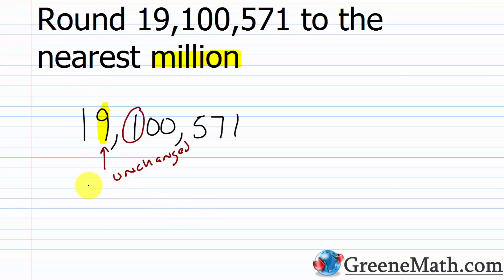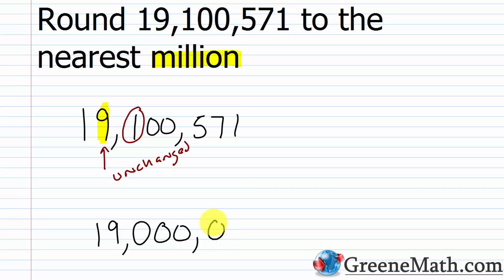So the 1 and the 9 will stay the same. And then every digit that follows that 9 — the digit in the roundoff place — we just turn into a 0. The 1 becomes a 0, the two 0s stay as 0s, and the 5, 7, and 1 each become a 0. So 19,100,571 rounded to the nearest million is 19 million. I'll see you again. Thank you.